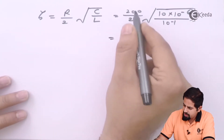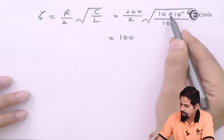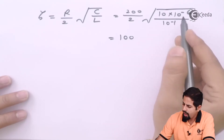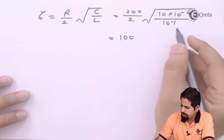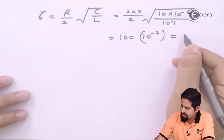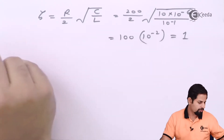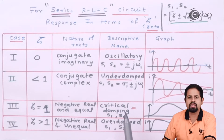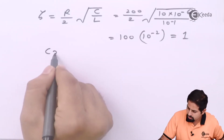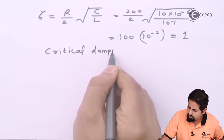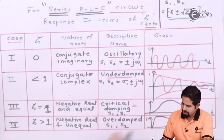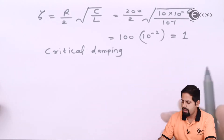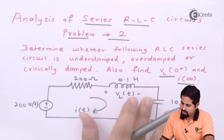When we solve this, here I will get 100, and 10 to the power minus 1 will go upstairs becoming plus 1, then it becomes 10-squared, and minus 6 plus 2 is minus 4. The whole answer for this term will be 10 to the power minus 2, so your answer will become 1. So zeta is 1, and from this table, when zeta is 1, you get negative real and equal roots — that is the case of critical damping.